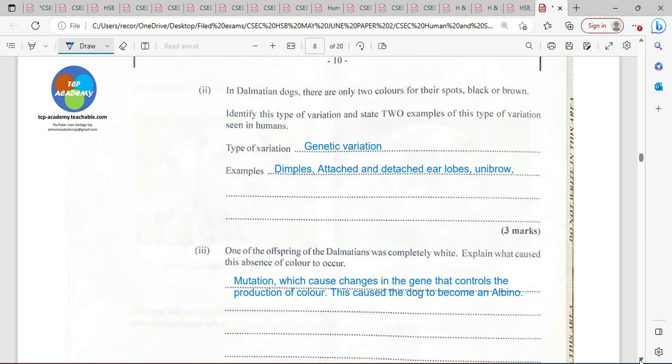Identify this type of variation and state two examples of this type of variation seen in human. So genetic variations are usually absolute. Environmental variation usually comes by continuous. So continuous variation, they have continuum 1, 1.2, 1.3, 1.4, 1.5. That's sort of a thing for continuous variation.